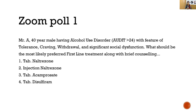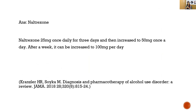This is a question uploaded on Zoom: Mr. A, a 40-year-old male, has alcohol use disorder with more than 24 units — highly dependent — with features of tolerance, craving, withdrawal, and significant social dysfunction. This is a case of alcohol use disorder. The correct answer is tablet naltrexone, starting with 25 mg once daily for three days, then increasing to 50 mg once daily, after which it can be increased to 100 mg per day.